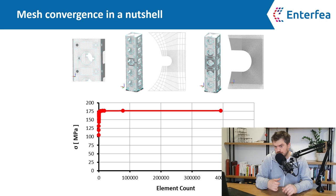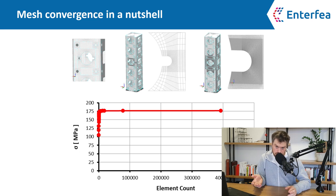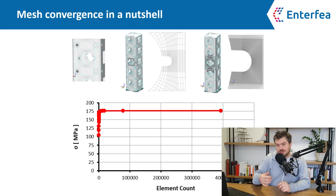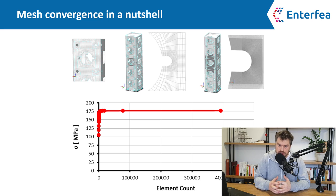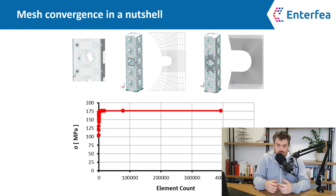Just select whatever output you are interested in — most likely that will be stress in some region of your model — and then make the elements smaller and smaller, so you get more and more elements. For each of those models, plot the outcome on a chart and see if the answer is converging as you increase the number of elements. This doesn't always work; sometimes you simply have a stress singularity and it will never converge. You can check my blog — there is an article about that. But in most normal cases, you would be able to pull this off.